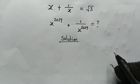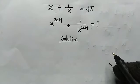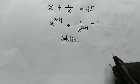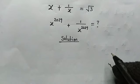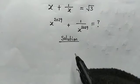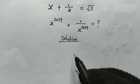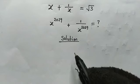Hello, welcome back once again. Today we have this Olympiad mathematics problem. We're given that x plus 1 over x is equal to root 3, and we're going to evaluate x to the power of 2029 plus 1 all over x to the power of 2029. Now let's get started.